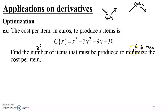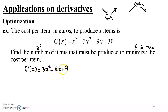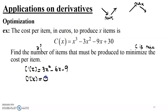To determine where C is minimum, I start by finding the first derivative C prime of X, which is 3x squared minus 6x minus 9. If you're not sure how this derivative was found, it's good to revisit the lesson on derivative functions and differentiation rules. To determine if this function admits any extremum, I need to find the roots of the first derivative, so I set C prime of X equal to zero.